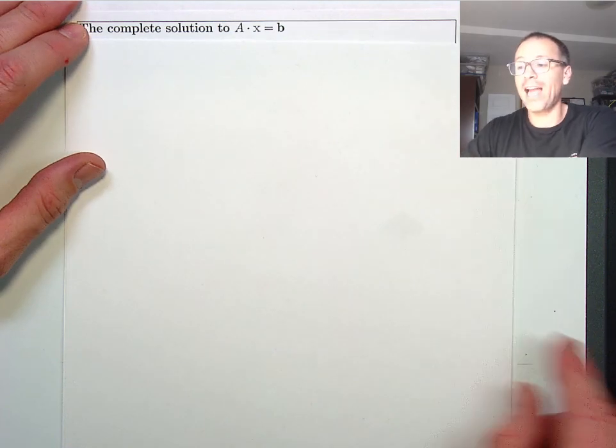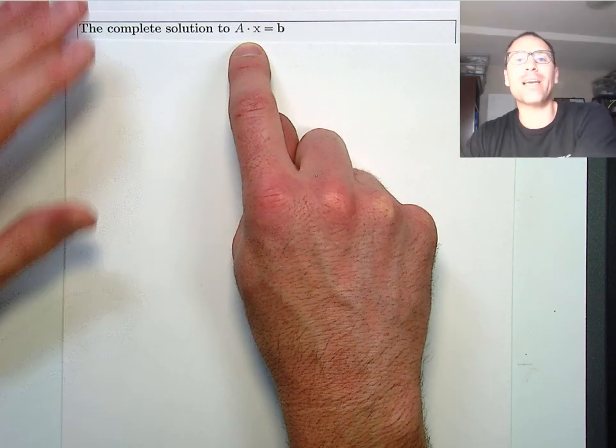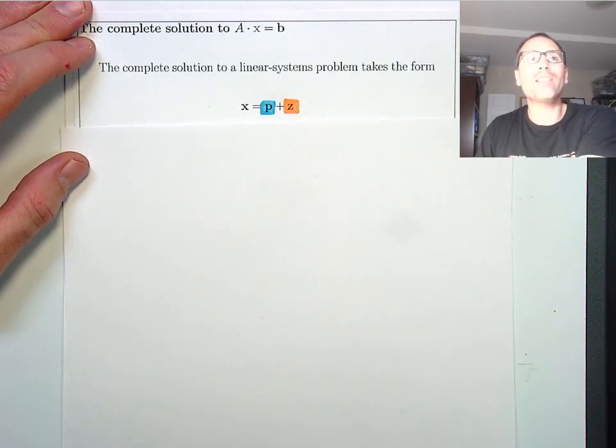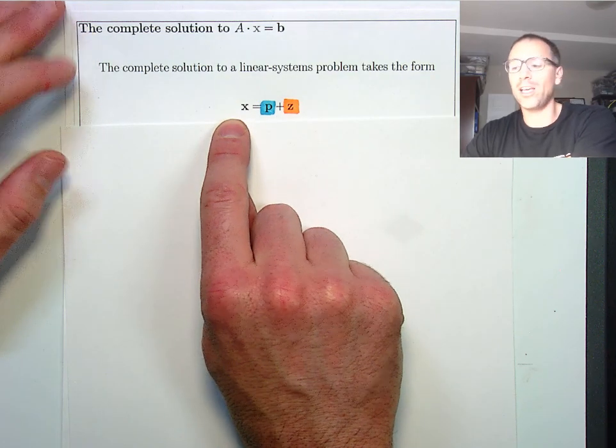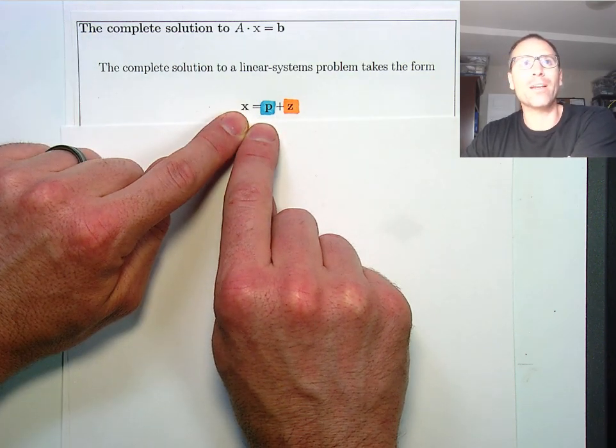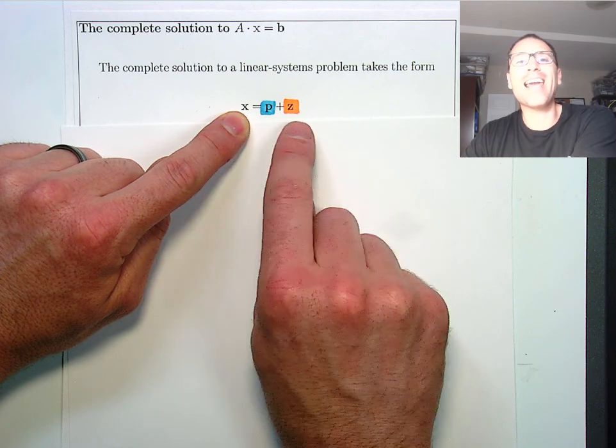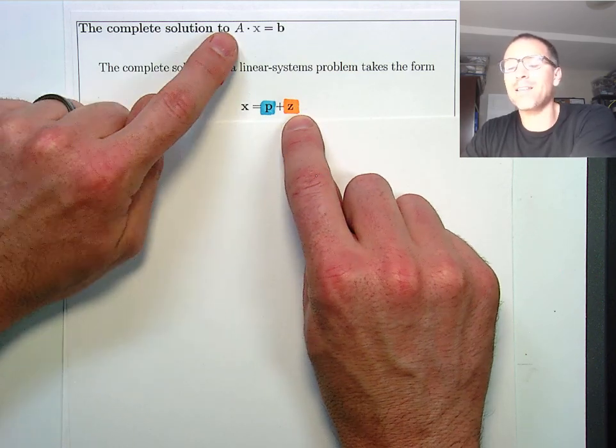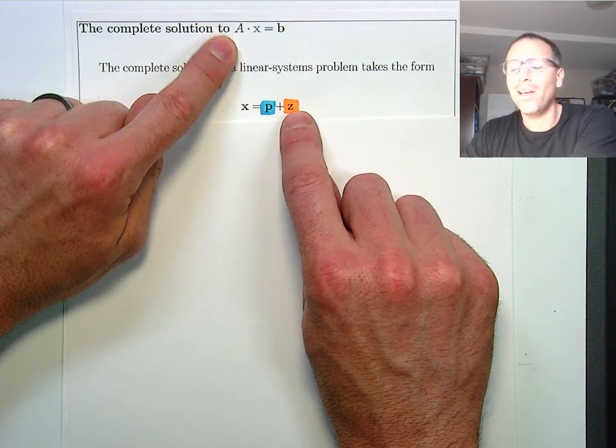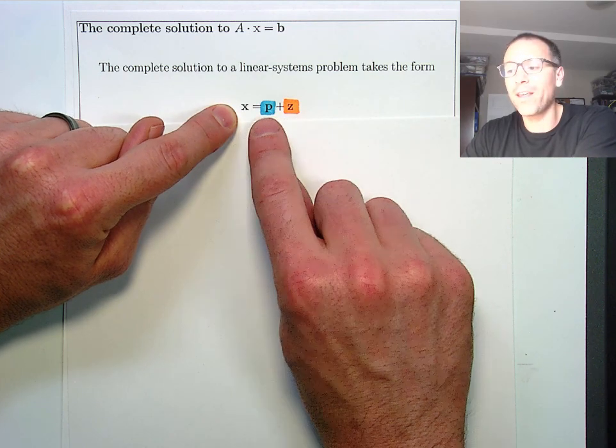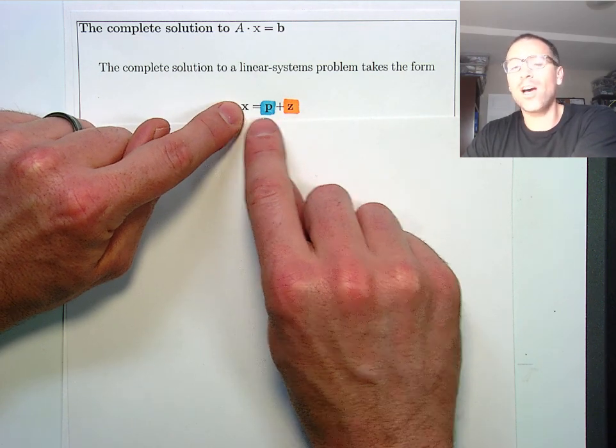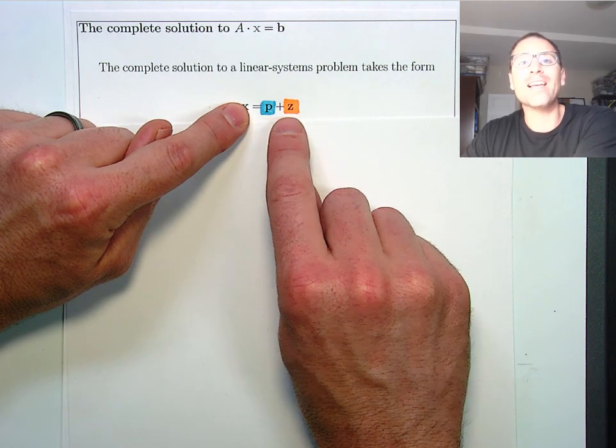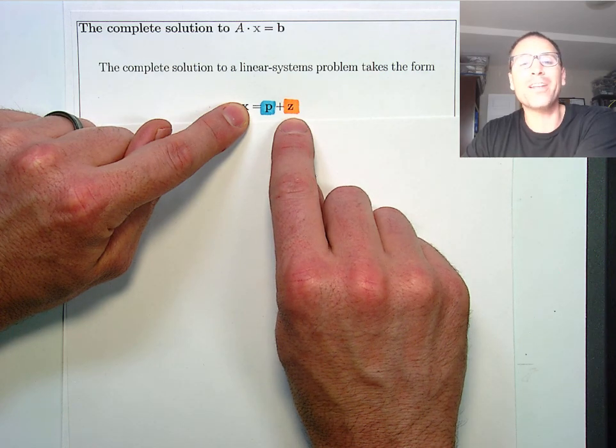Every solution, anytime I'm faced with the linear system in the form A times x equals b, a complete solution to that problem will always take the form: the complete solution is a particular solution highlighted in blue plus a trivial solution to the homogeneous linear system problem, something that sends the matrix to zero. Here you see the notation is kind of creative in the way that I'm saying any solution is a sum of a particular solution, that's why I put a p there, plus a zero solution. That's why I put a z there.